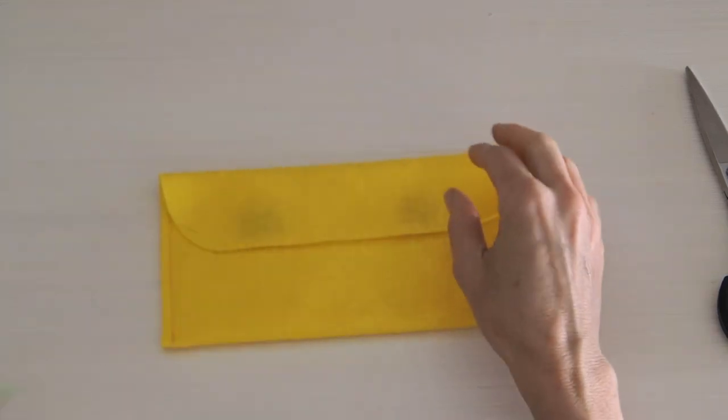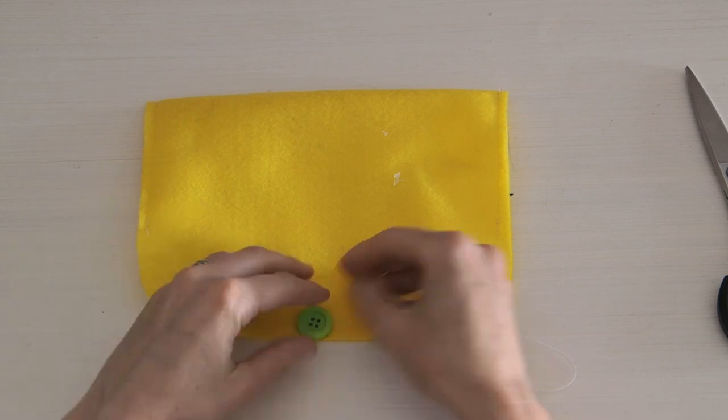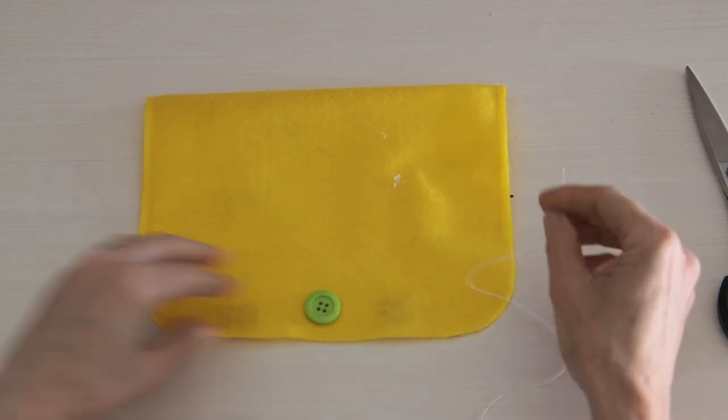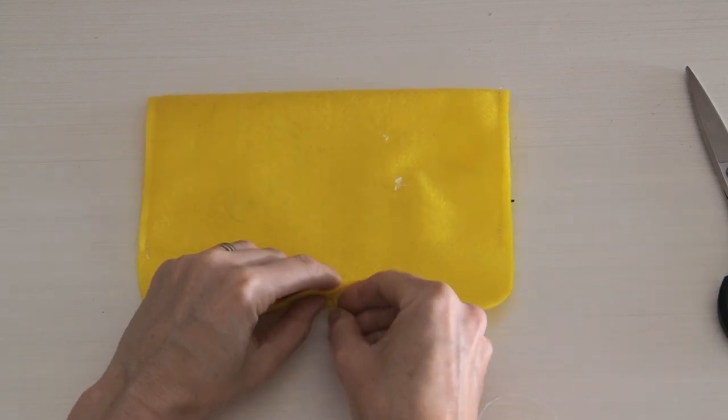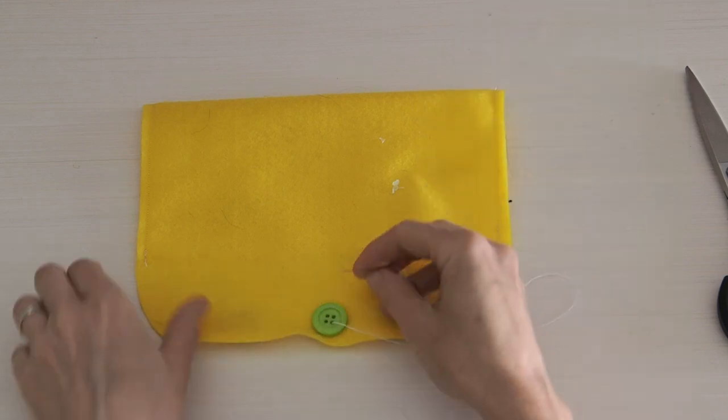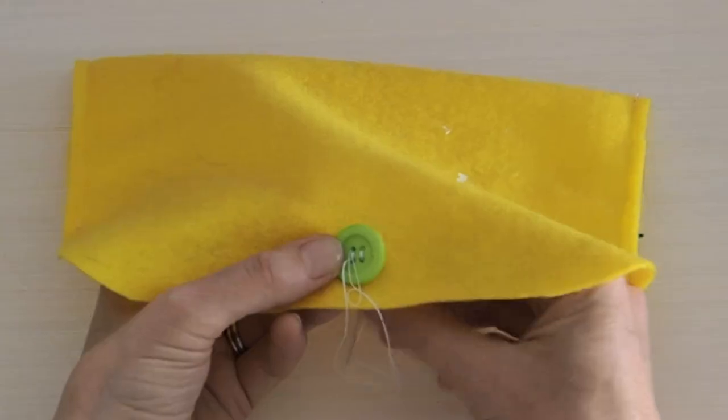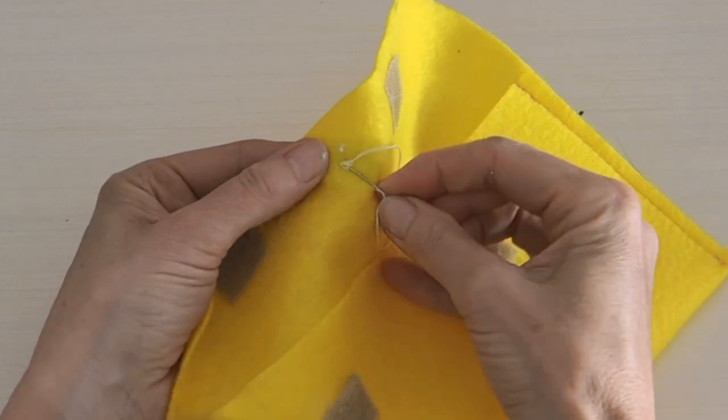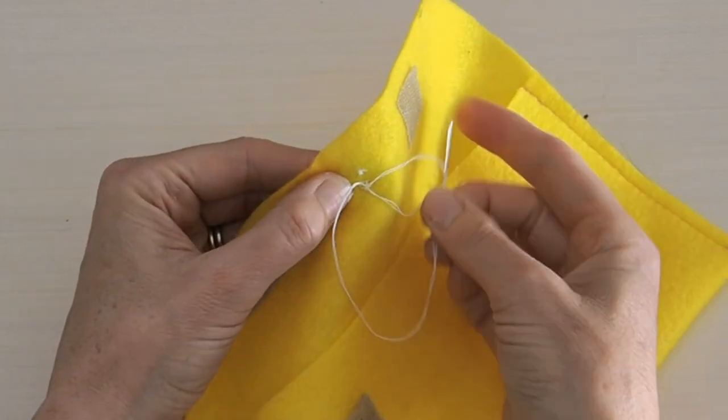Next we're going to put a little button on there. The button is not obviously used since we have the velcro but it just looks cute with a little button on there as an embellishment. So we're going to stitch the button on there just a few times up and down with our thread and then knot it off on the underside so you don't see the knot there on the button.